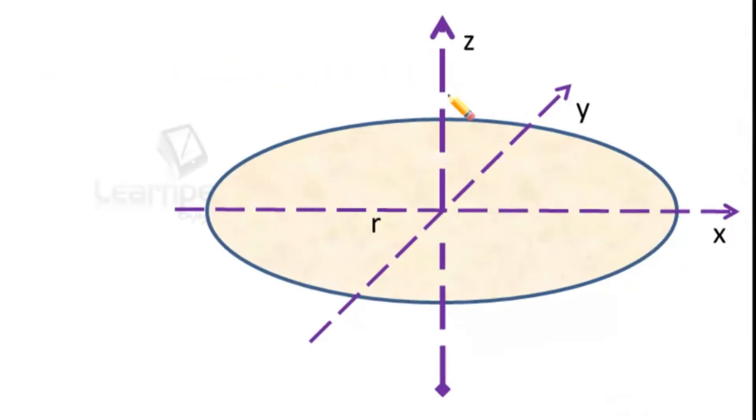That means we want to calculate about the Z axis. I have shown you here X axis, Y axis, Z axis. About this axis in the plane XY, the disk is revolving or rotating. We want to calculate moment of inertia about the Z axis.